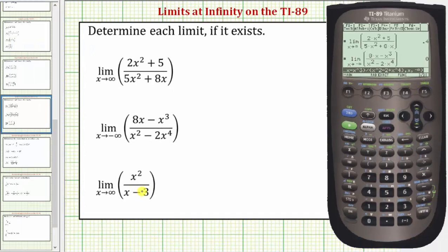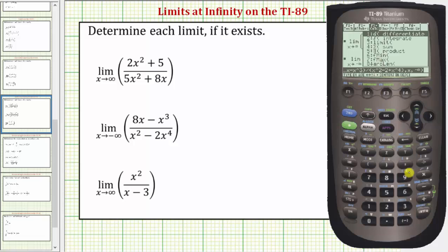And now let's determine our last limit, the limit as x approaches infinity of x squared divided by the quantity x minus three. We could edit this previous entry, but I think it's almost just as fast to go through the whole process again. So we'll press F3, number three, and then for our function,